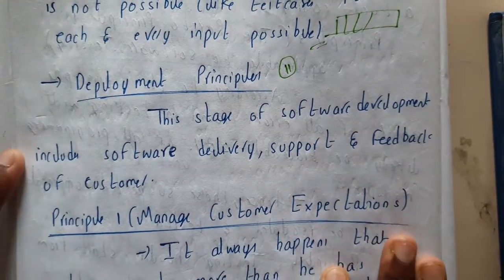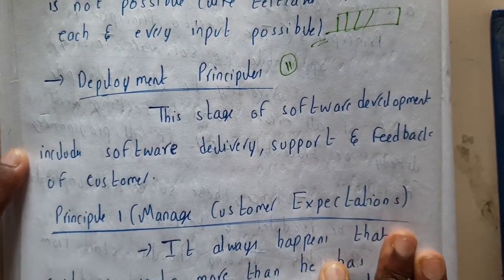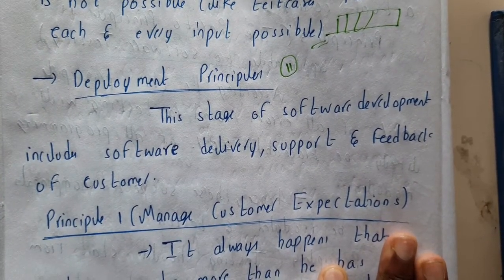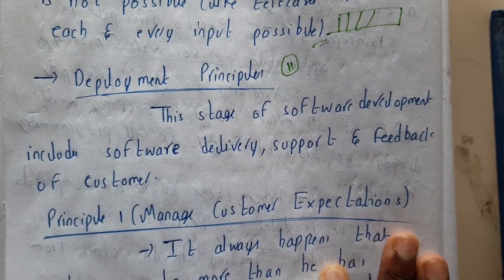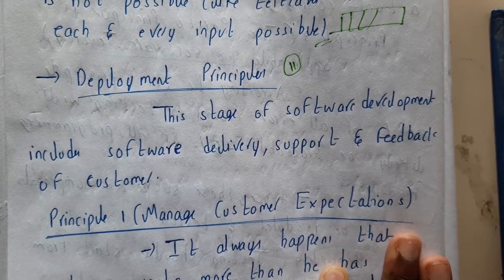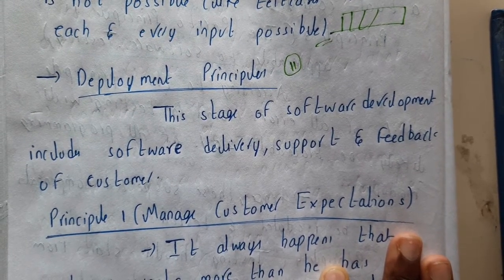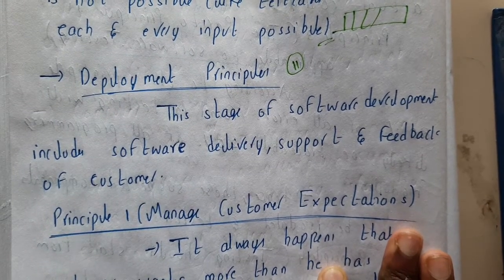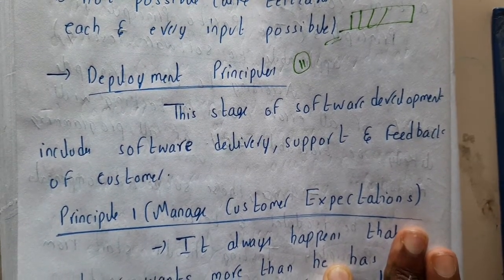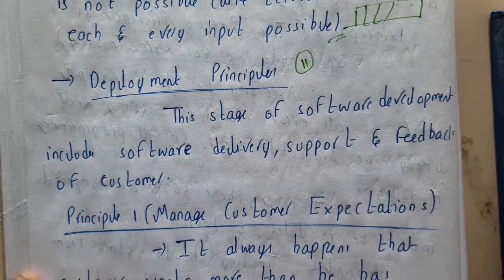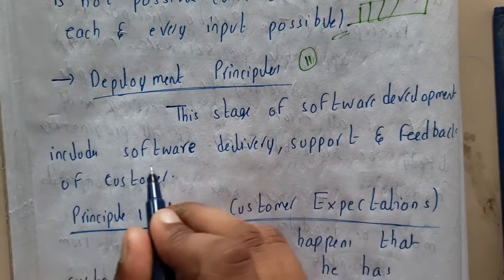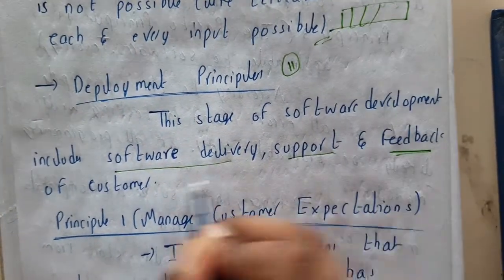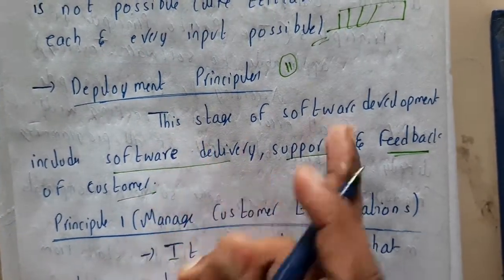Hello guys, we are back with our next lecture. In this lecture, let us go through deployment principles. Now we are done with coding and testing, so the last step left is deployment. Deployment includes three main things: software delivery, support, and feedback from the customers.